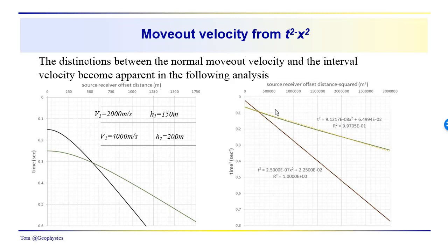Looking at these equations, the constant term is one over V-NMO-squared, and the other constant is the intercept time squared. The same applies below: this would be the reciprocal of the NMO velocity for the reflection from the base of layer one, and this would be its t₀ squared. We noted that the correlation coefficient R-squared was a little bit less than one, versus perfectly equal to one for the reflection from horizon one. We do get straight lines if the velocity is relatively constant in the layer, but it doesn't quite work out when an average velocity differs from the interval velocity.